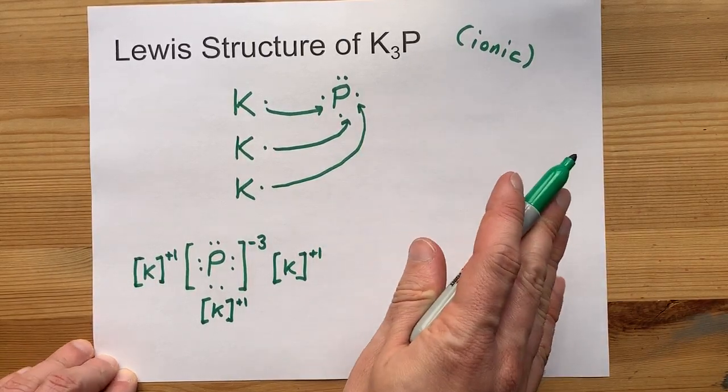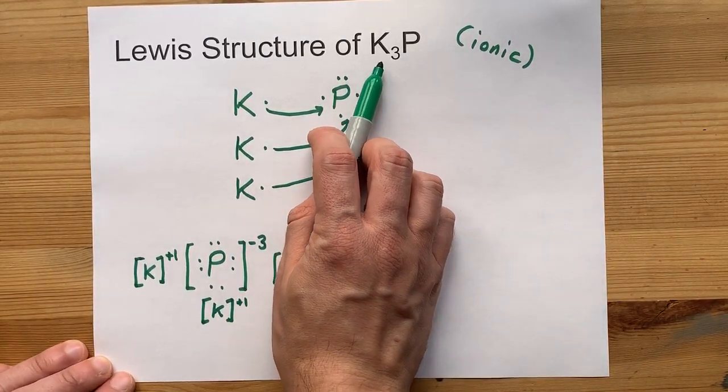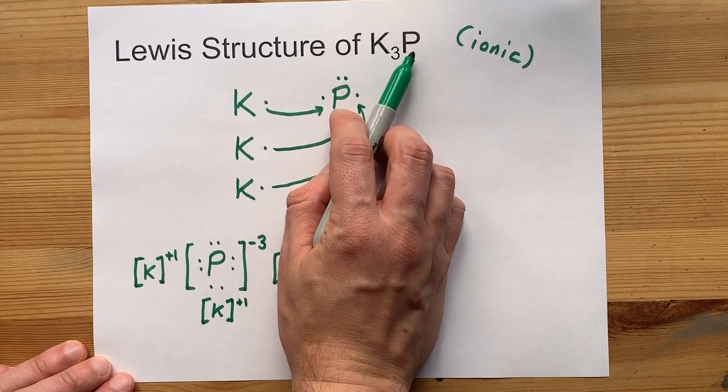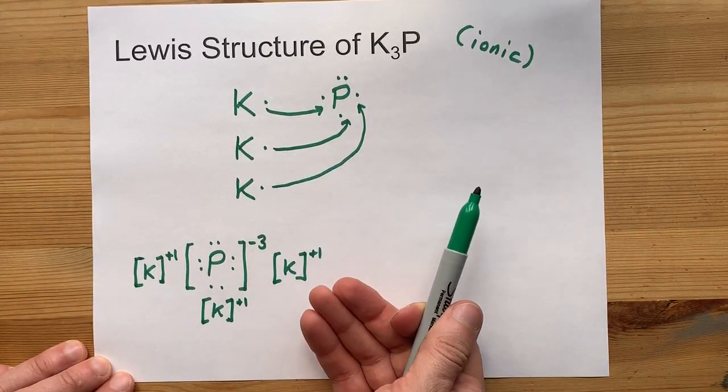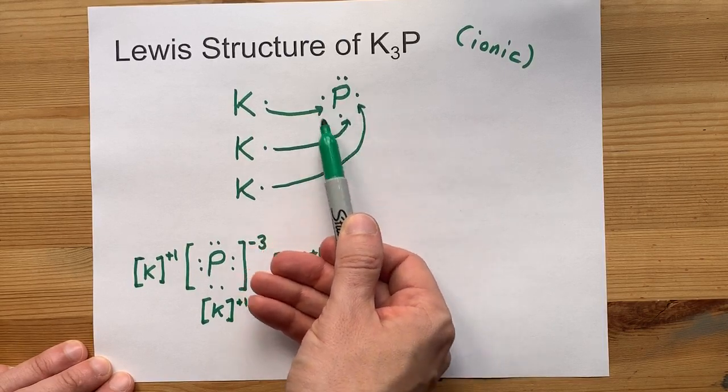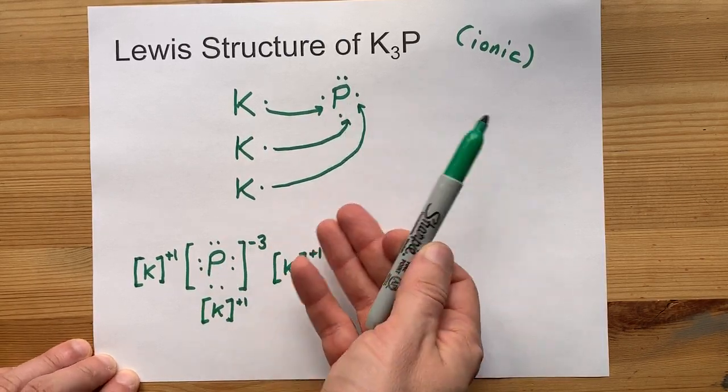It's not a coincidence that the formula is K3P. You needed three K's to balance out the electrons of the P and give P the full outer shell.